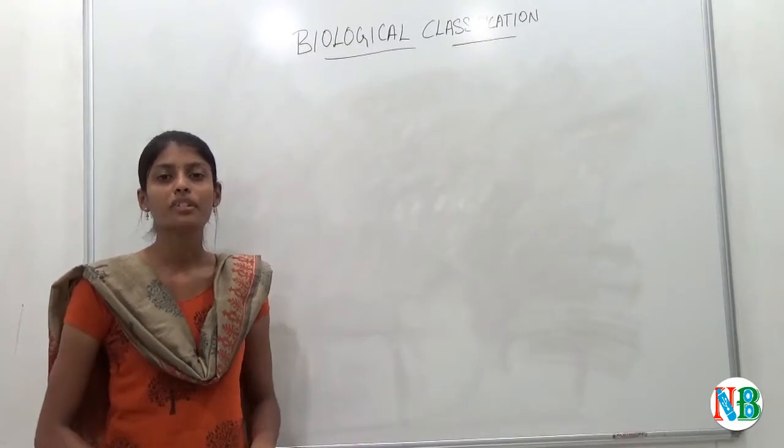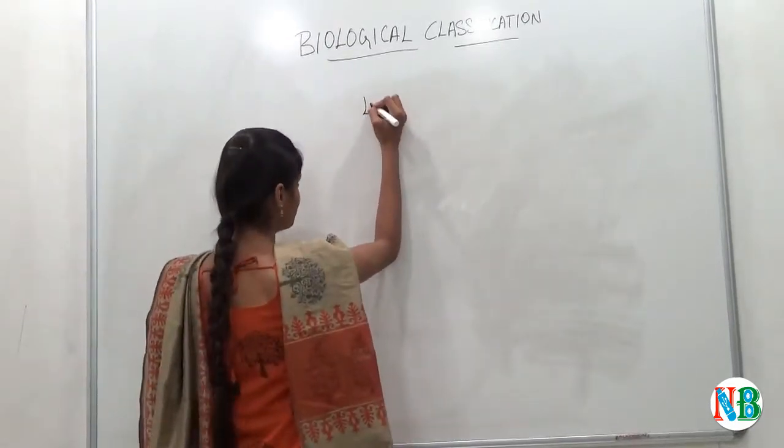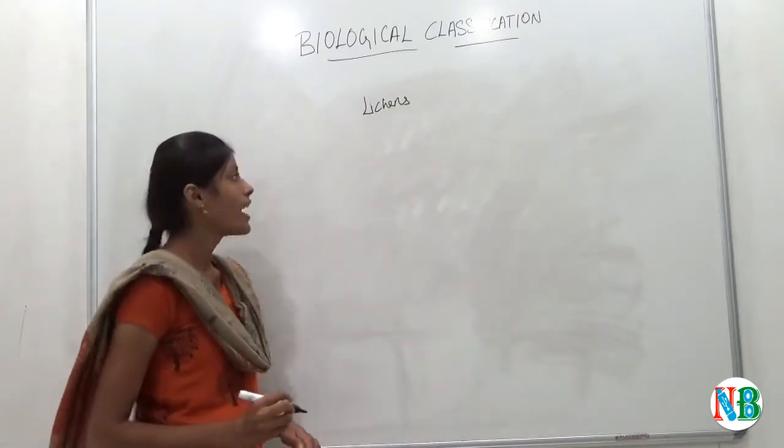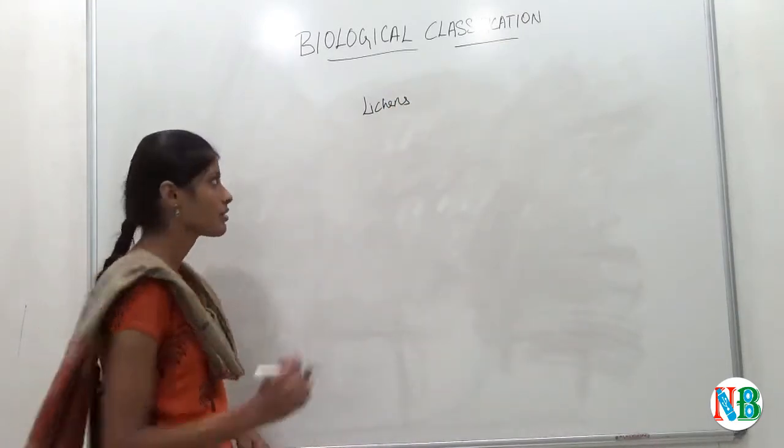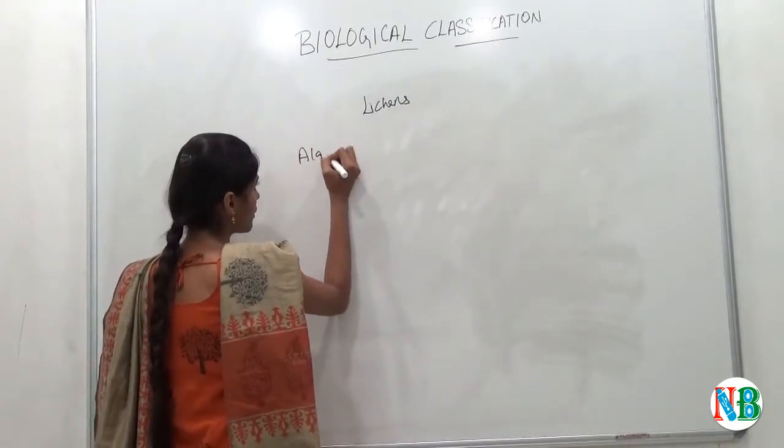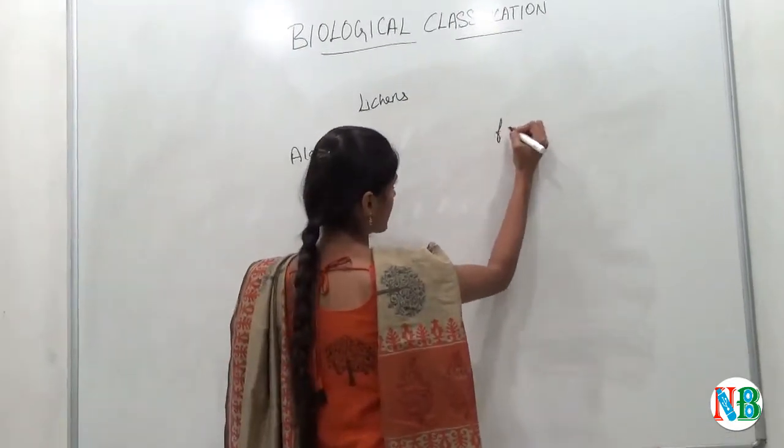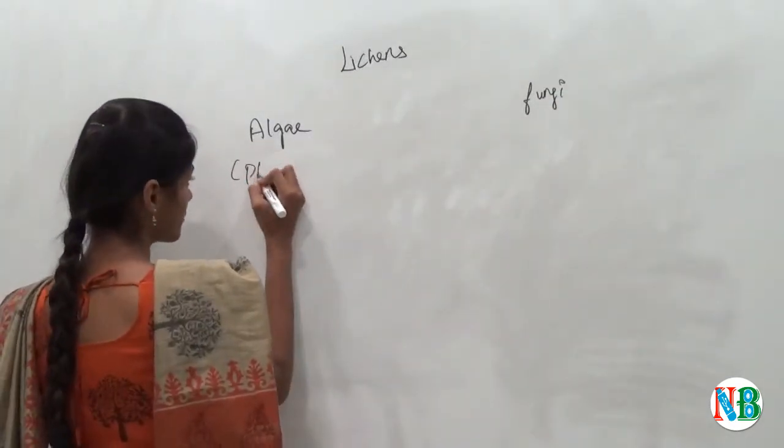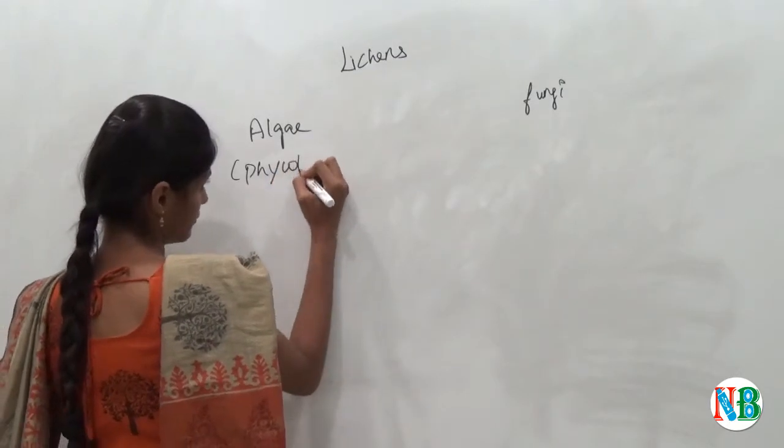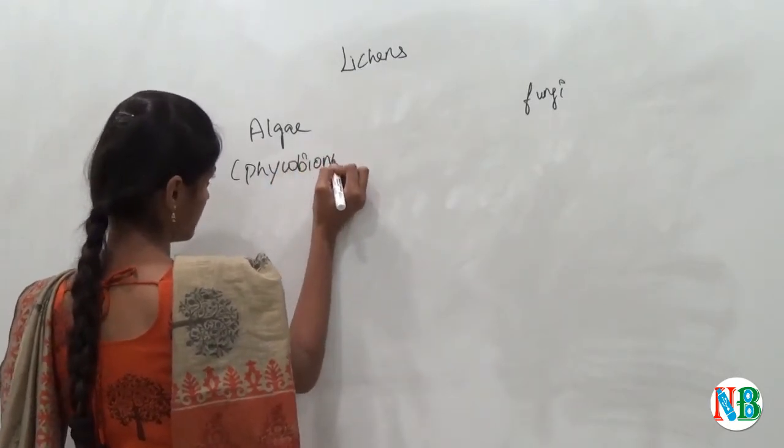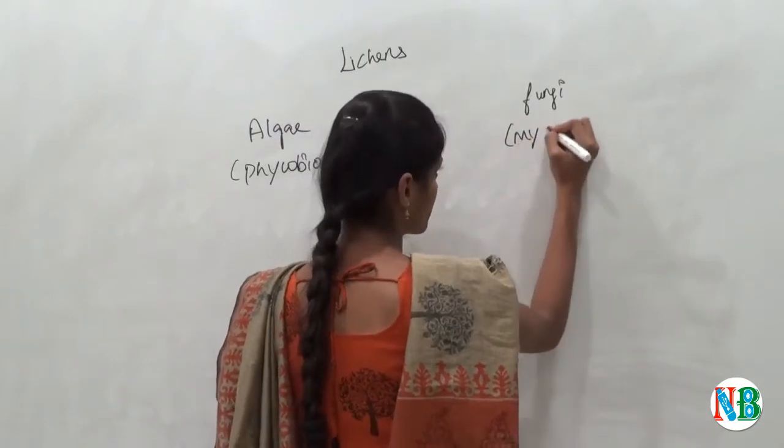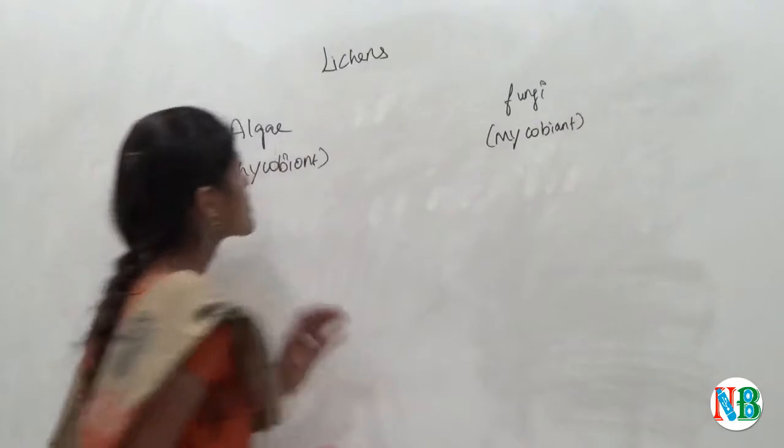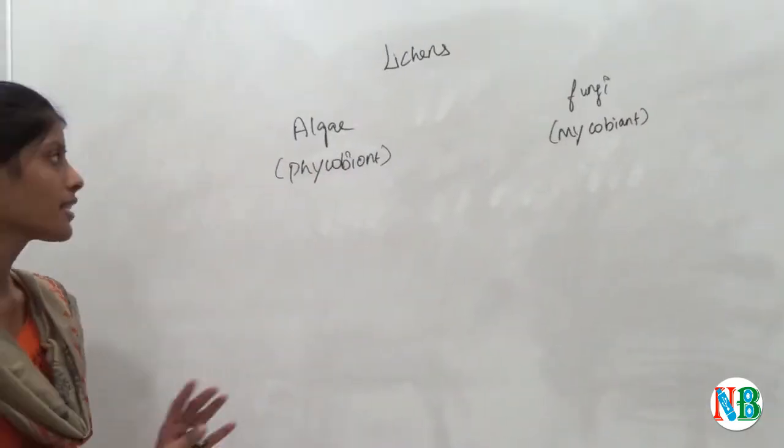Now we will see about lichens. Lichens have symbiotic associations, that is with algae and fungi. Algae are phycobiont. Fungi are mycobiont. Symbiotic association means a give and take policy.